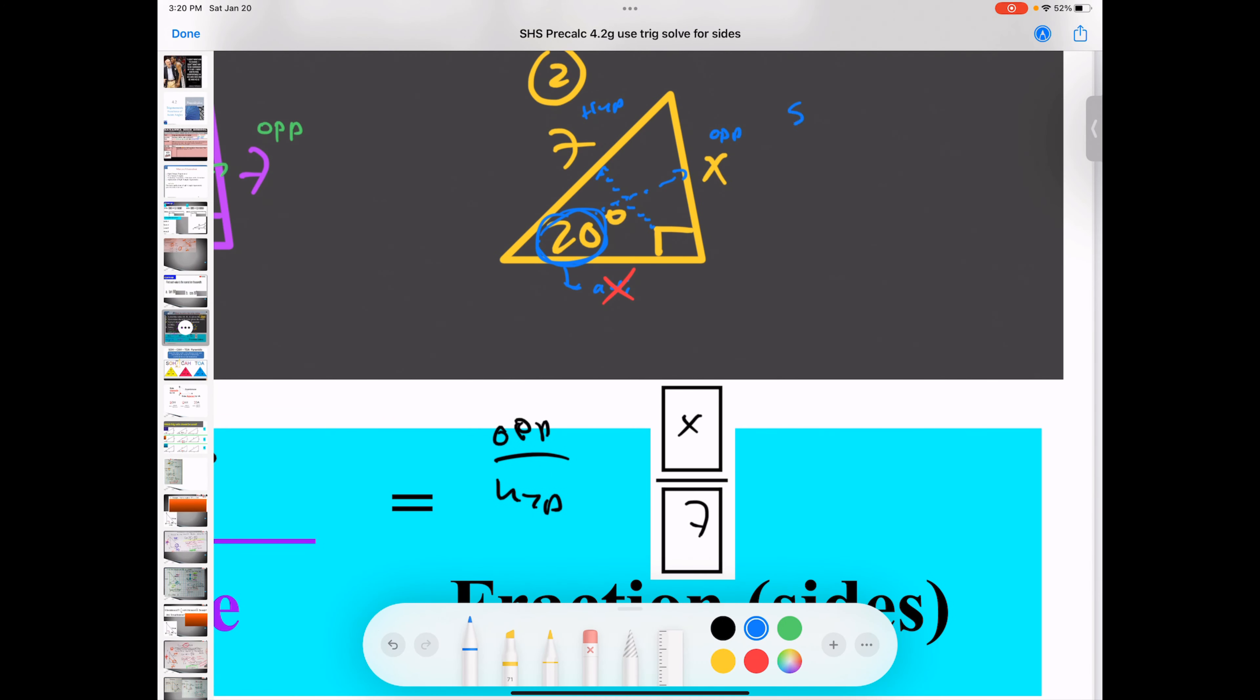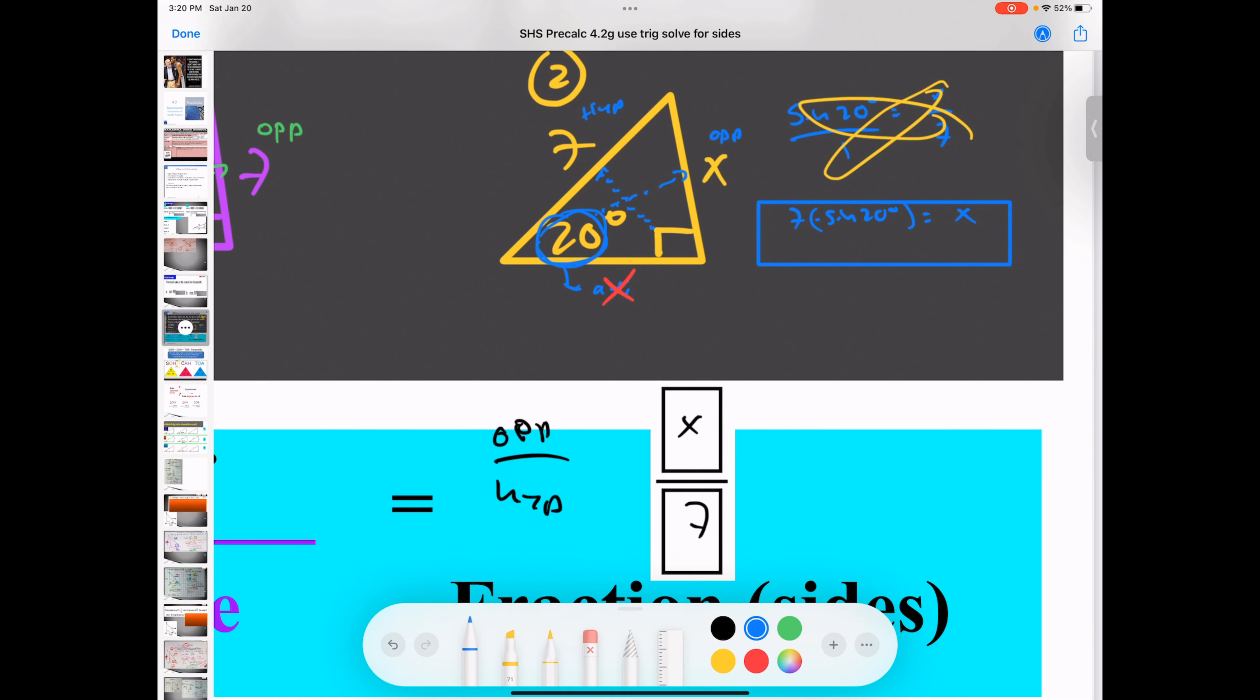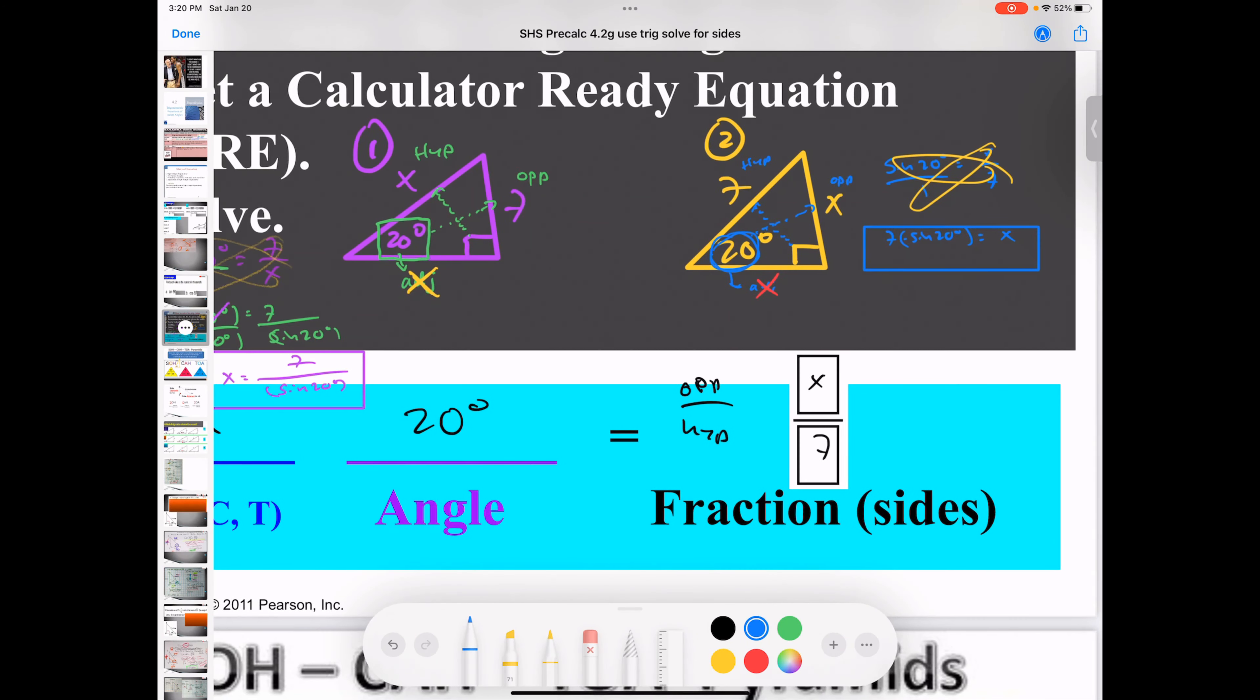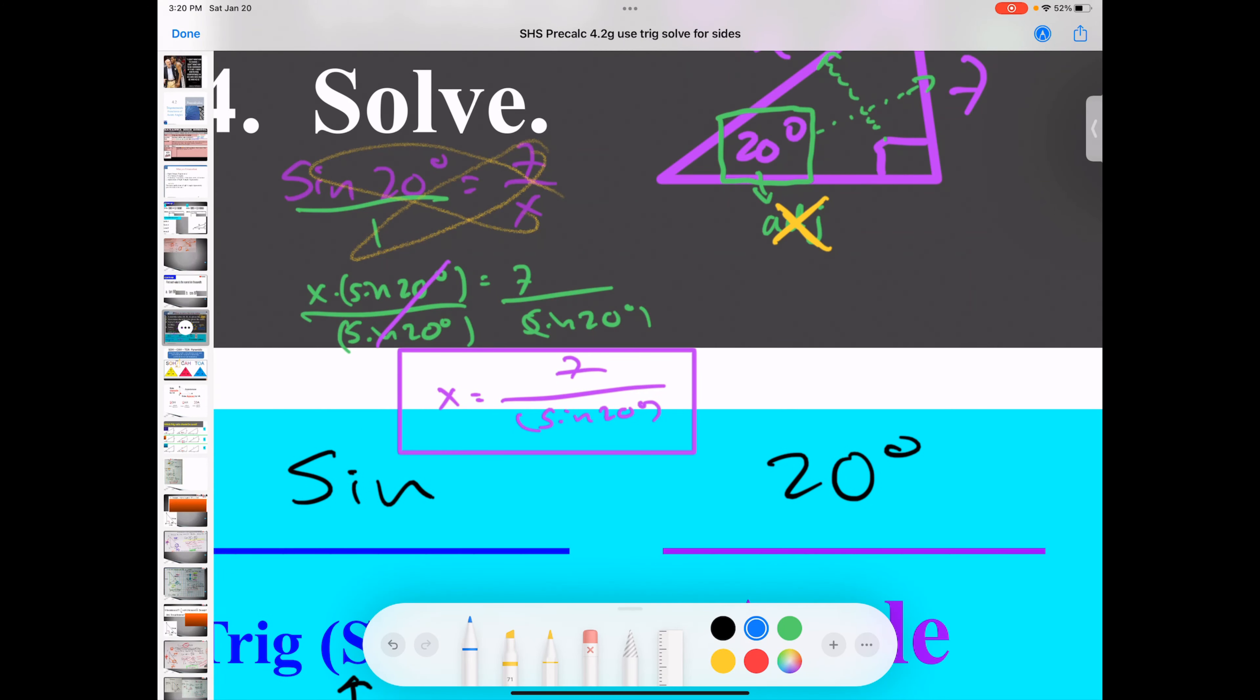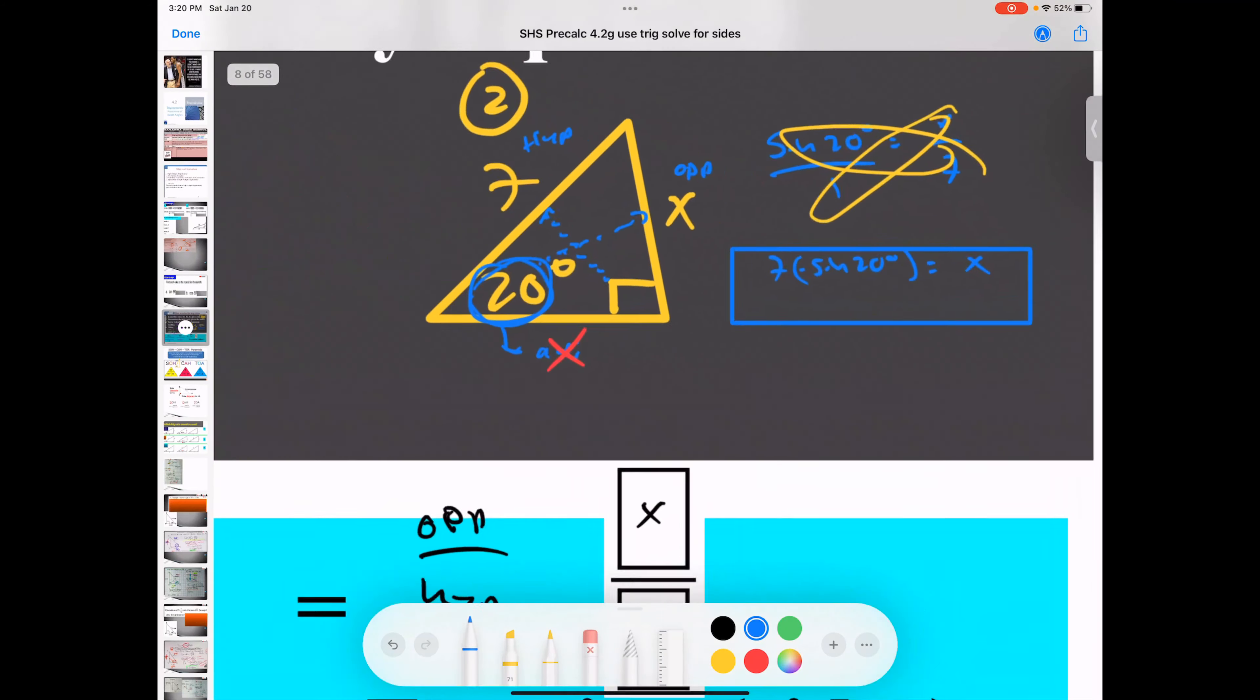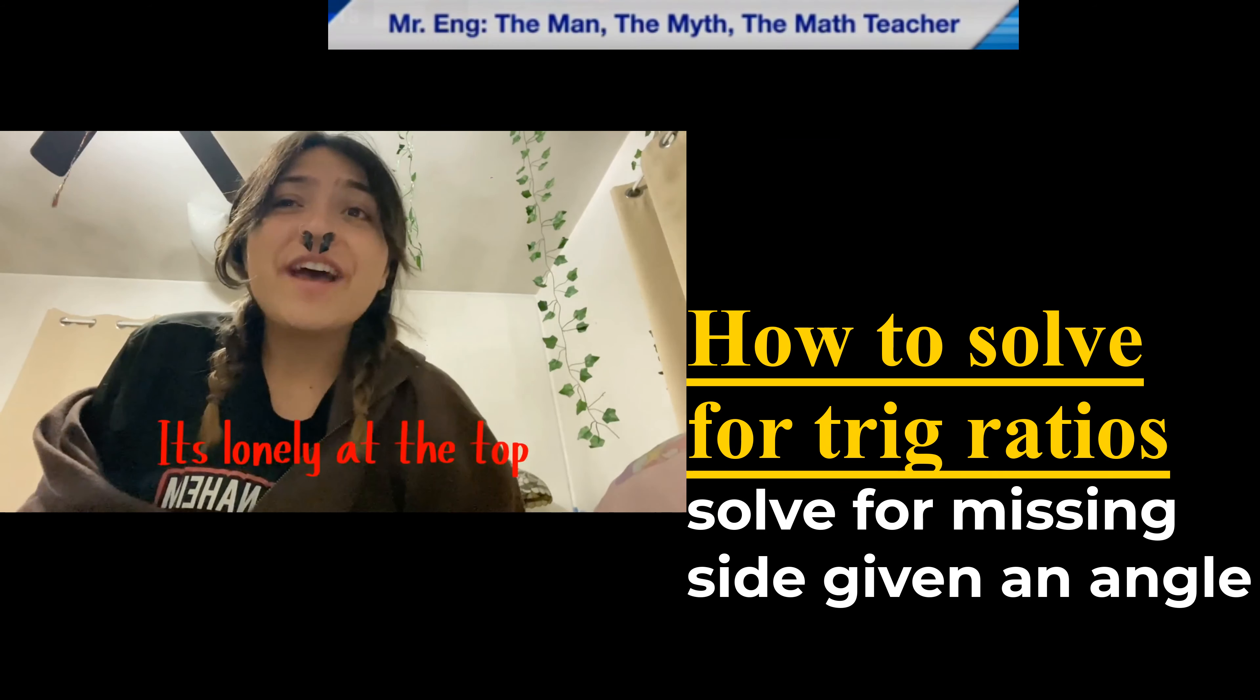So in this problem, it would be sine of 20 degrees equals X over 7. You'll just do the same thing, cross-multiply. You'll get 7 times sine of 20 degrees equals X. There's my calculator ready equation. What's the difference between the two problems? The purple one, you'll notice that the variable was on the bottom. And over here, you realize that the variable is on the top.